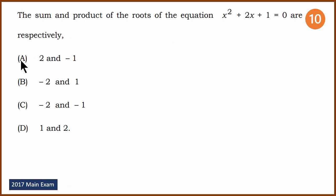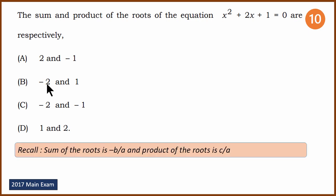The final question is about sum and product of roots. The sum of the roots is minus b by a. Here b equals 2 and a equals 1, so the sum is minus 2. The product of the roots is c by a, which equals 1. The answer is B.